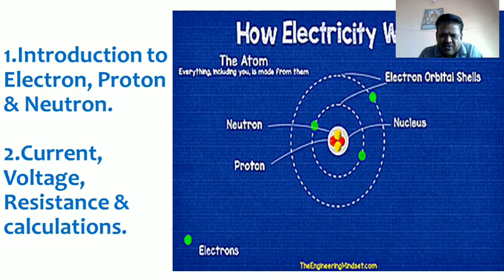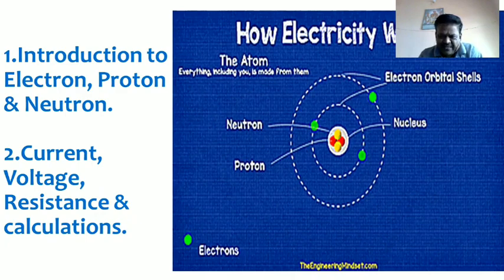There is zero force of attraction on the outermost electrons, so they are out of control and free to move from one atom to another atom — these are called free electrons. In any material there are millions and trillions of such free electrons moving in random directions. When an external force is applied, this force makes the randomly moving electrons move in one particular direction. This movement of free electrons in one particular direction is called current.